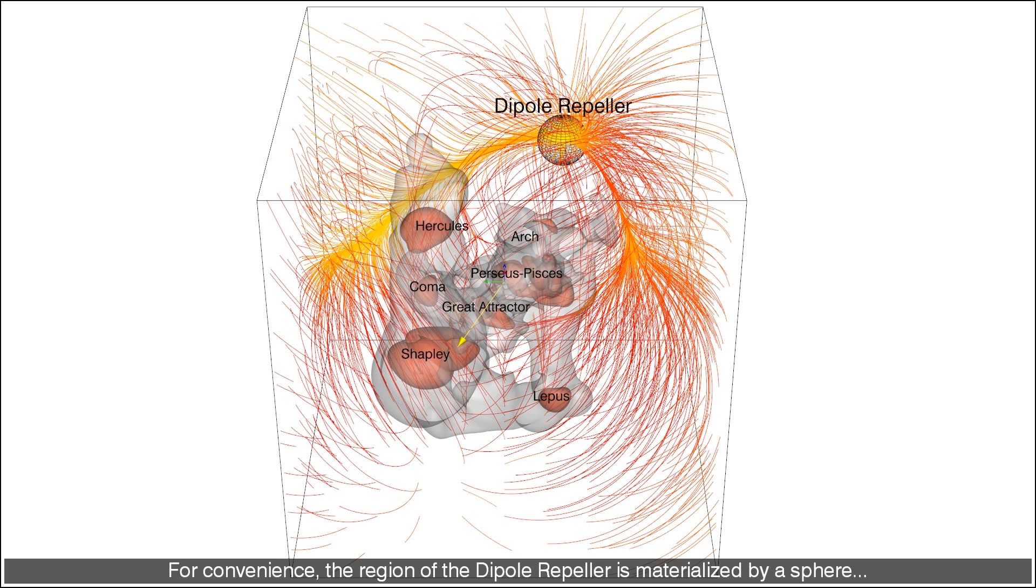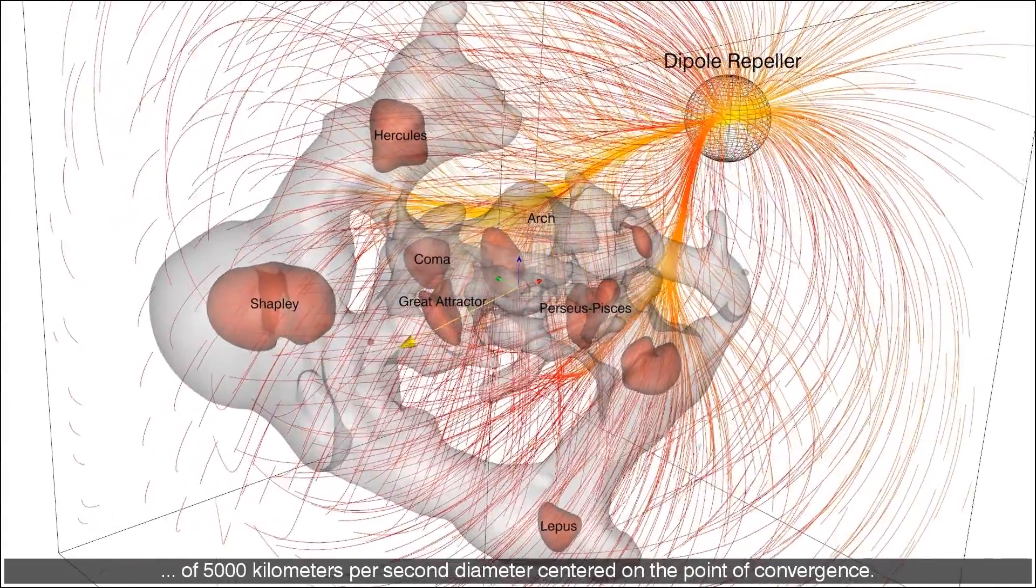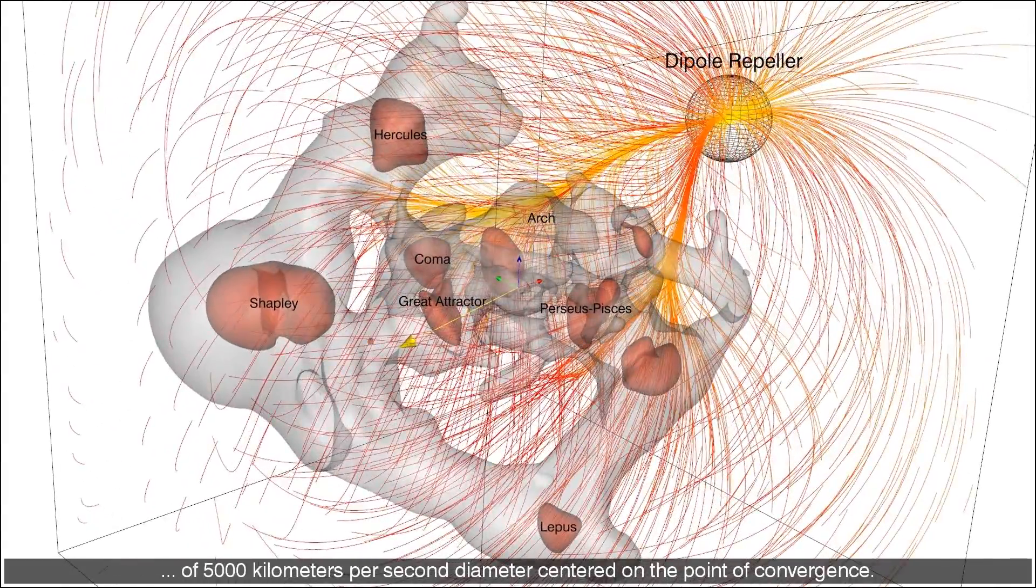For convenience, the region of the dipole repeller is materialized by a sphere of 5000 km per second diameter centered on the point of convergence.